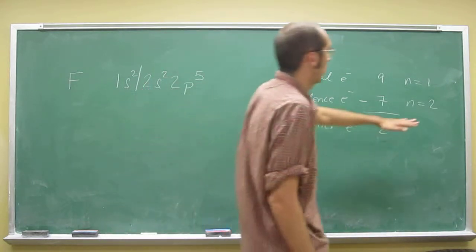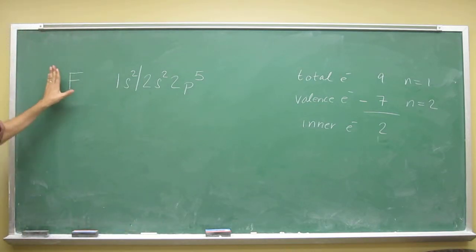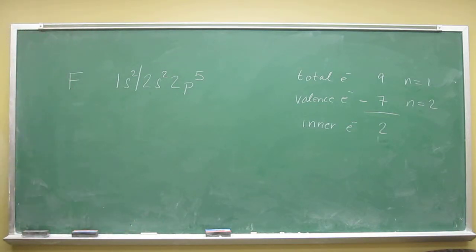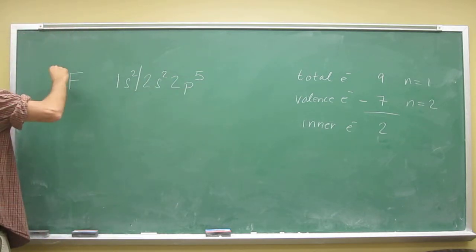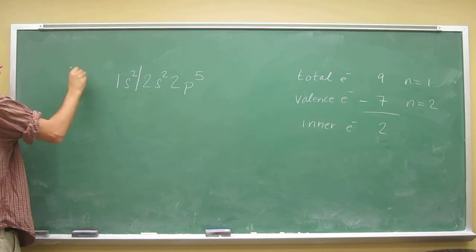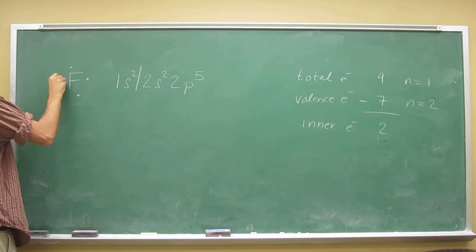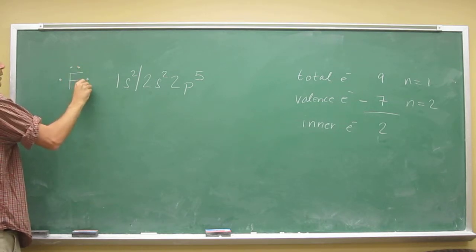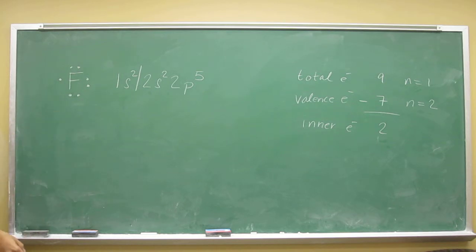Remember, this energy level can only hold 2 electrons; the n=2 level can hold 8. With fluorine, there's something called a Lewis structure — you just put dots around the elemental symbol to designate how many valence electrons. You go 1, 2, 3, 4, 5, 6, 7. And that's the Lewis structure for fluorine.